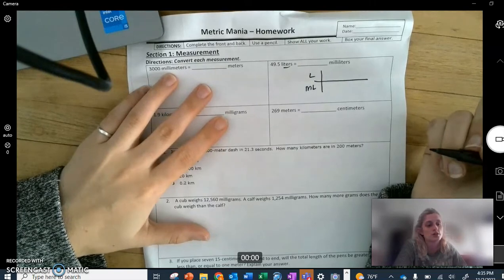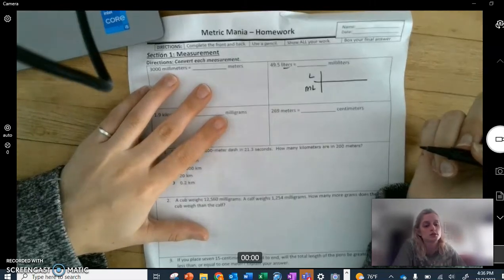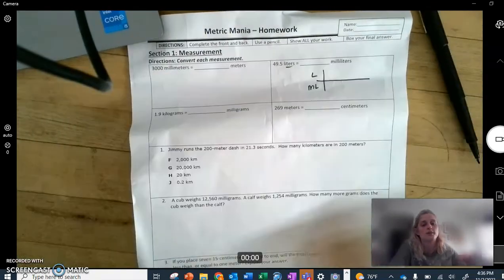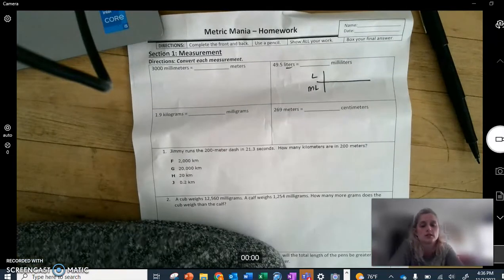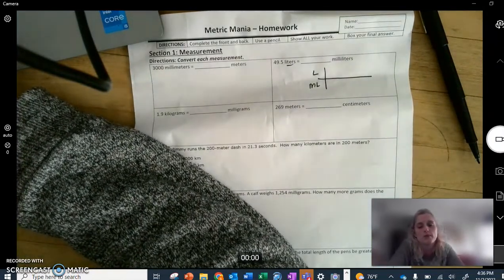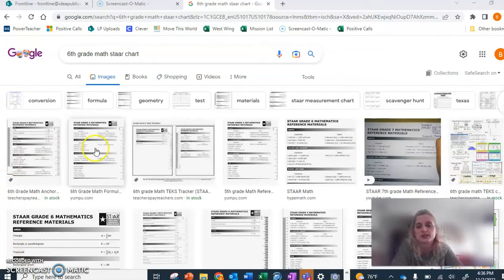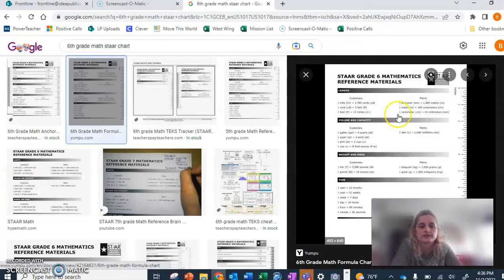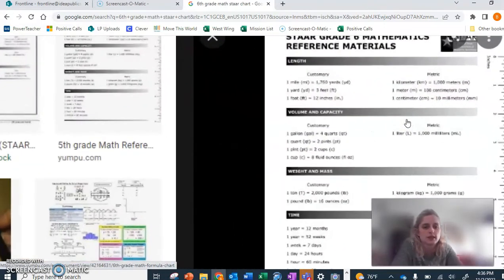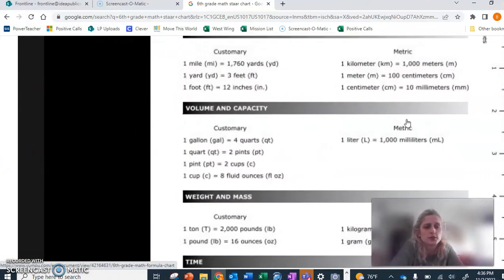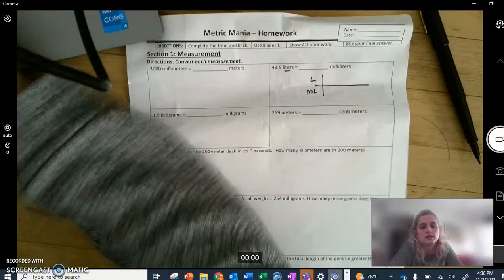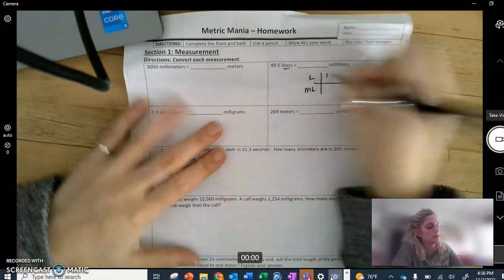Then you're going to reference your star chart which you can easily google online and I'll put a picture of right here so you can actually just snap a picture of it. If you just google sixth grade math star chart that'll come up. Here it is, I googled it real quick, you can pull it up, make it even bigger.